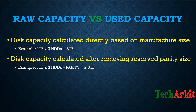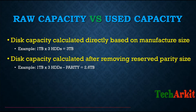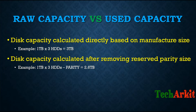Before going into RAID, we have to understand raw capacity and used capacity. Raw capacity is the disk capacity directly calculated based on the manufactured size. For example, if you buy a one terabyte hard disk and include three such disks, the raw capacity is three terabytes — just the manufactured size multiplied by the number of drives.